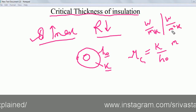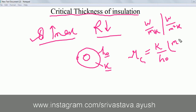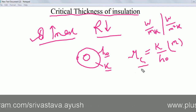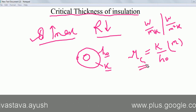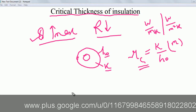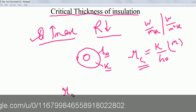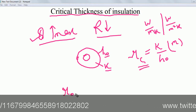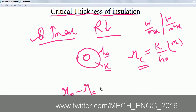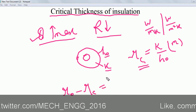When you cancel out the units, meters comes out on top, so the unit is meters. This is the critical radius of insulation. The critical thickness of insulation is R0 minus RC — that is, the outer radius minus the critical radius.